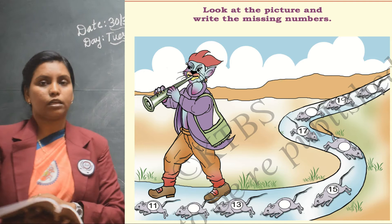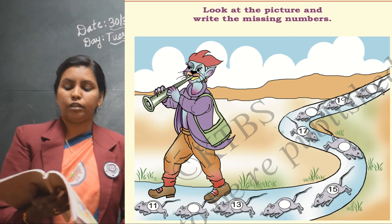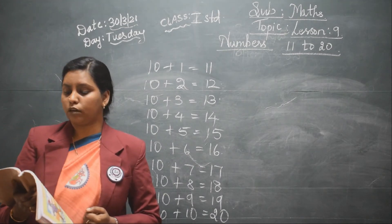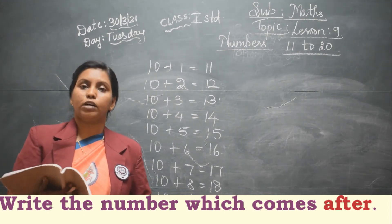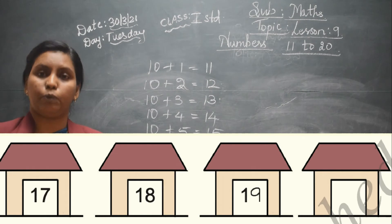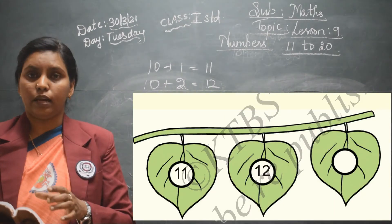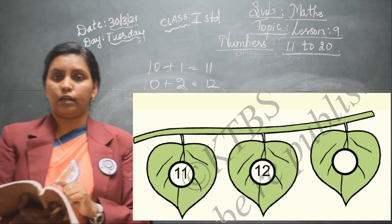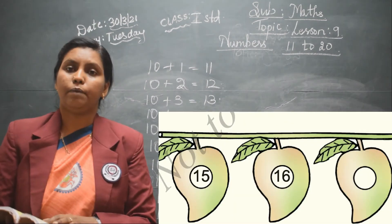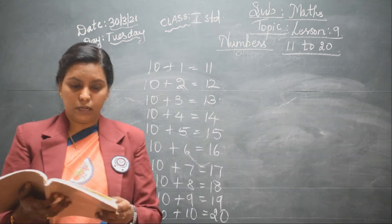After 19 it is 20. In the next row they have given you pictures of leaves. The first one is 11, the second number is 12, and the third number will be 13. In the third row they have given you pictures of mangoes. The first mango is given as 15, the second is 16, and the third missing number you have to write is 17.